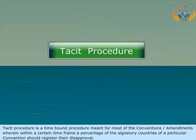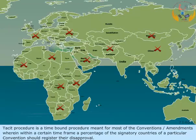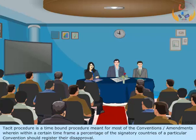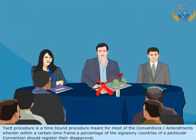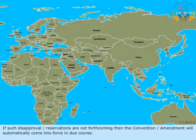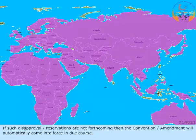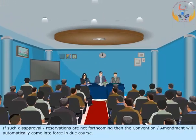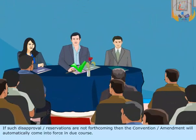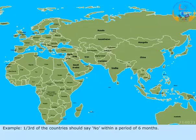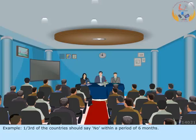Tacit Procedure is a time-bound procedure meant for most conventions or amendments, wherein within a certain time-frame, a percentage of the signatory countries should register their disapproval. If such disapproval or reservations are not forthcoming, then the Convention or amendment will automatically come into force in due course. For example, 1/3 of the countries should say NO within a period of 6 months.